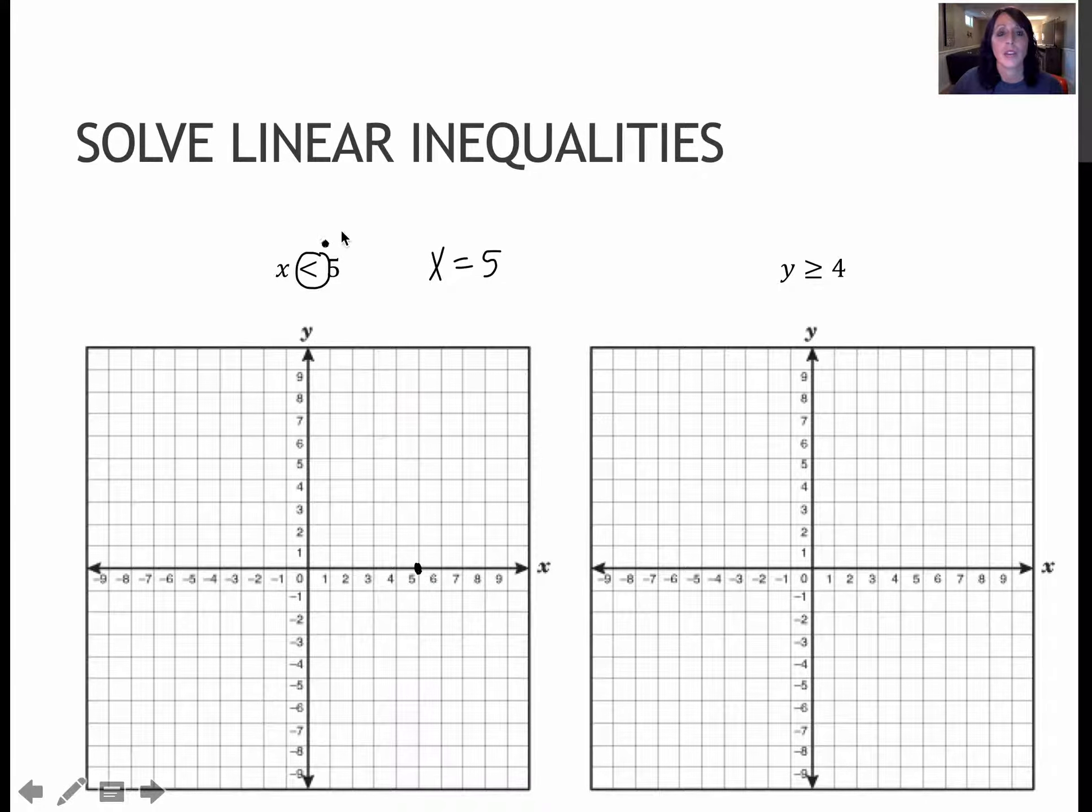Now this is an inequality rather than an equal sign. Because there's no or equal to, this is a dotted or dashed line.